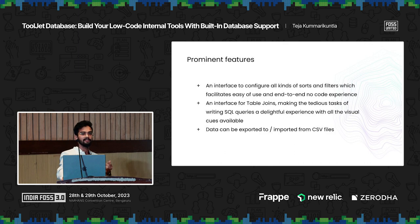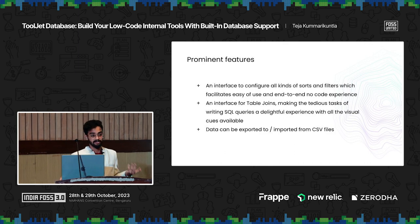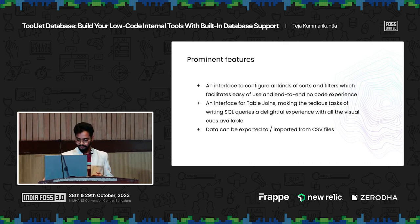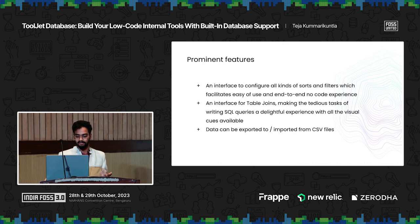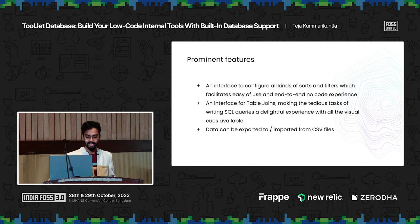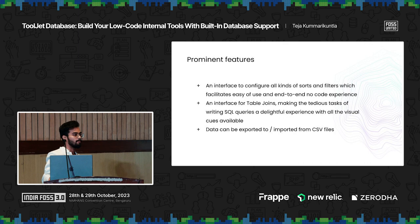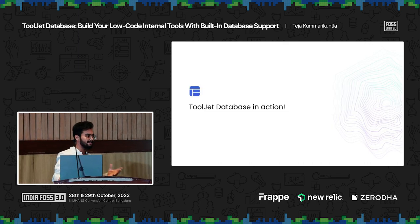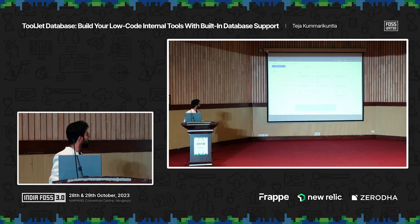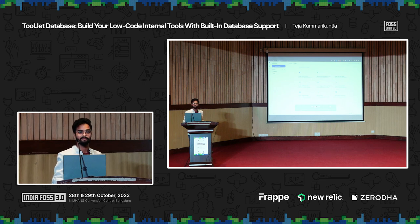Before we jump into looking live at how ToolJet Database looks, here are some prominent features. It comes with all sorts of filters. You can also do joins, data can be exported and imported — just giving you an overview of what level of operations you can perform right from the UI inside ToolJet. So let's see it in action — I have a quick video recorded so that the demo won't go wrong, at least from my end.